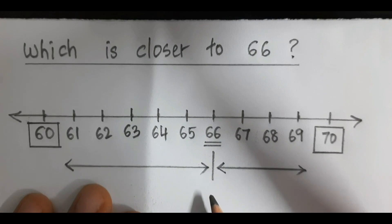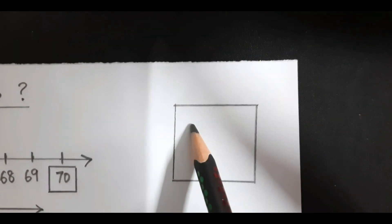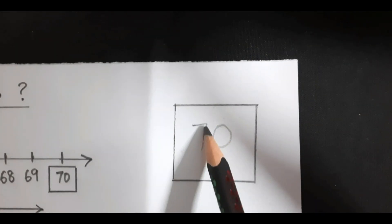Now, ask the child, pointing to the arrows, which is closer to 66? Is it 60 or is it 70? The child will look at these arrows and mark number 70. So, 70 is the answer.